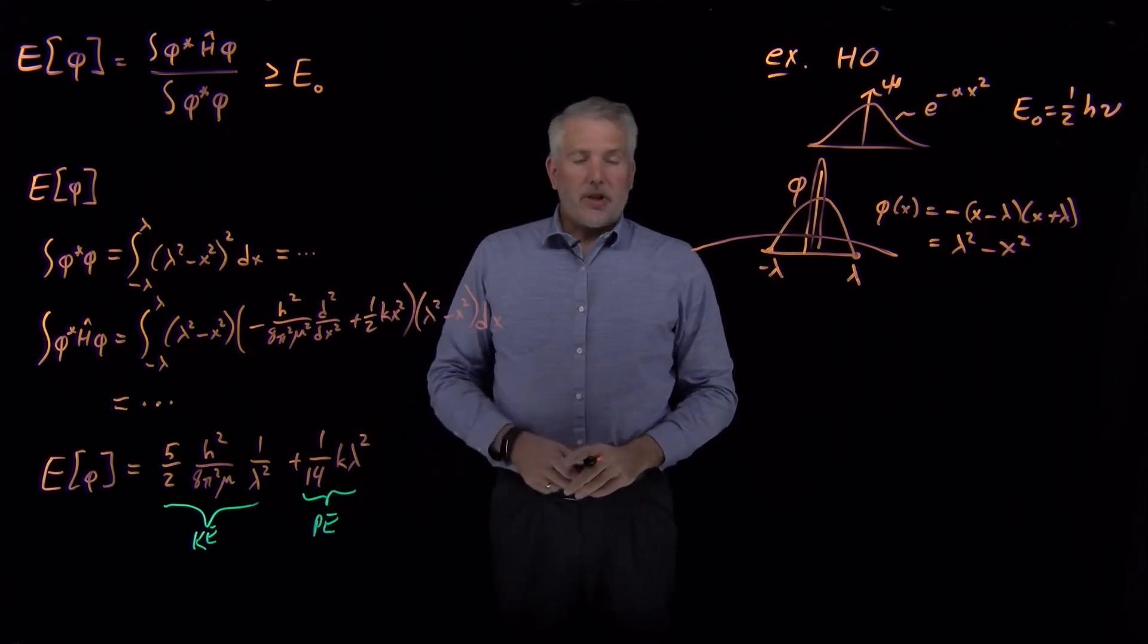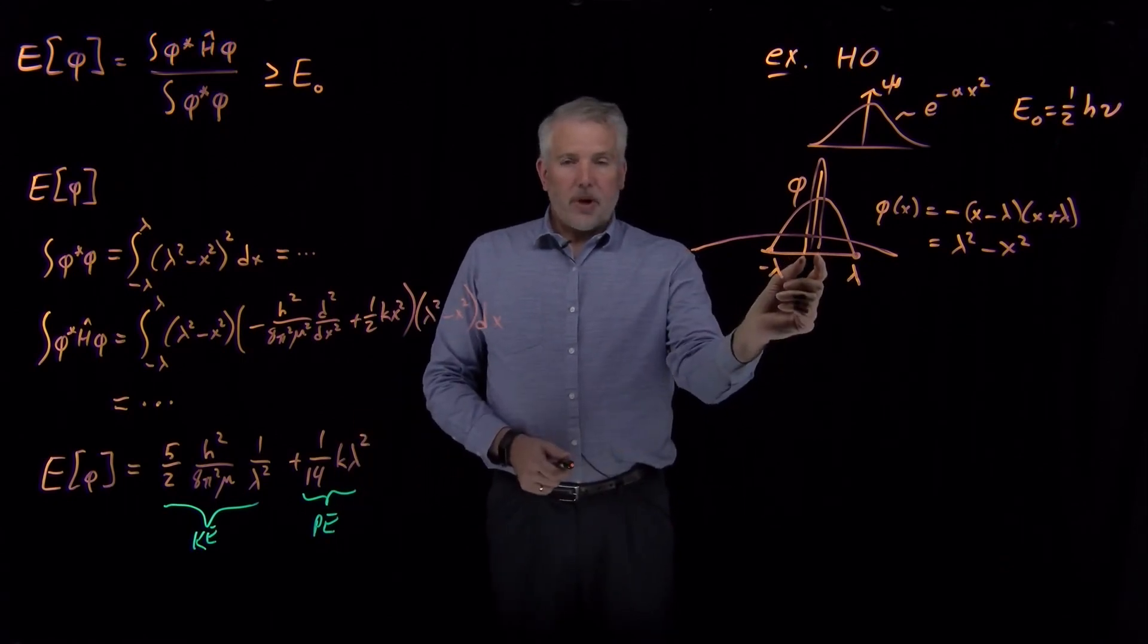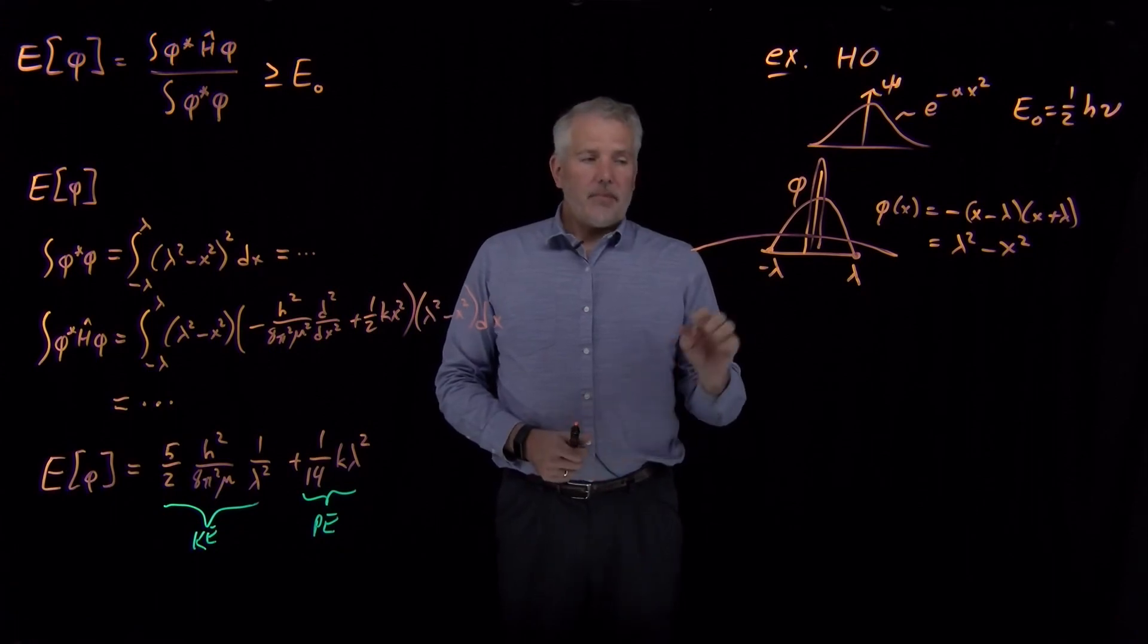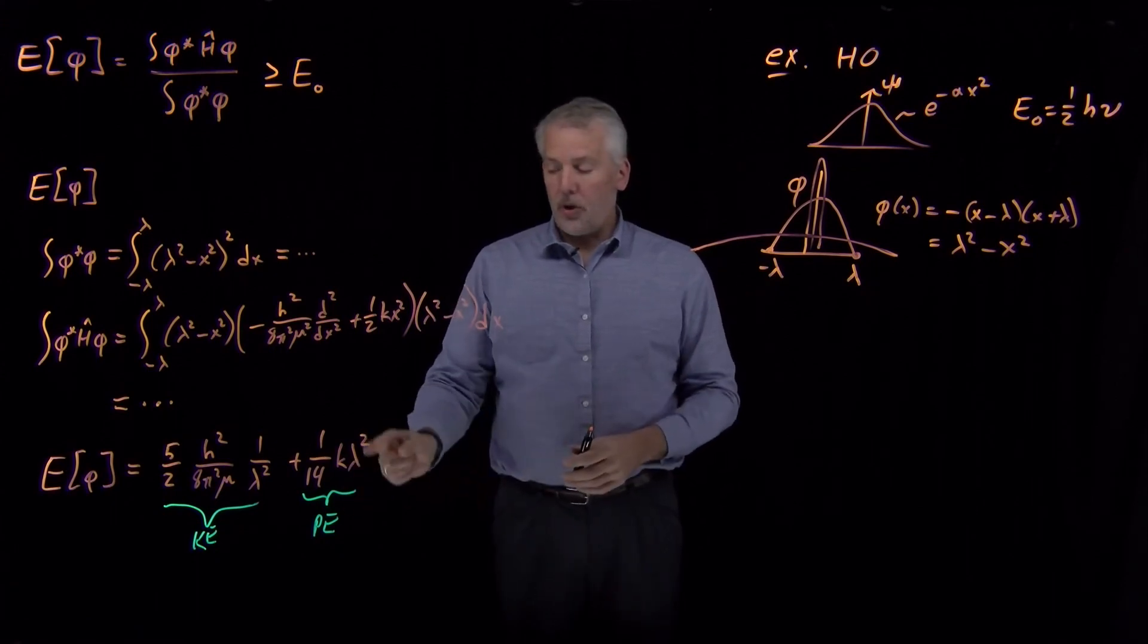But if lambda is very small, the potential energy is very low. By confining the particle near the origin to small values of x, I've confined it to near the minimum of my harmonic oscillator potential well. So I can make the function have a very low potential energy at the expense of having a relatively high kinetic energy.